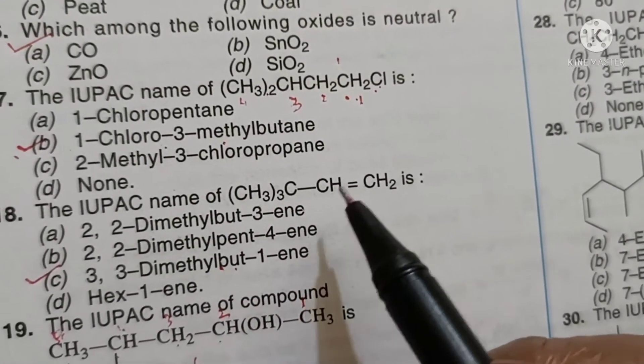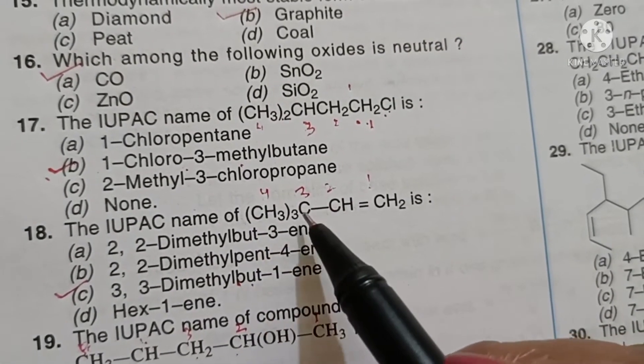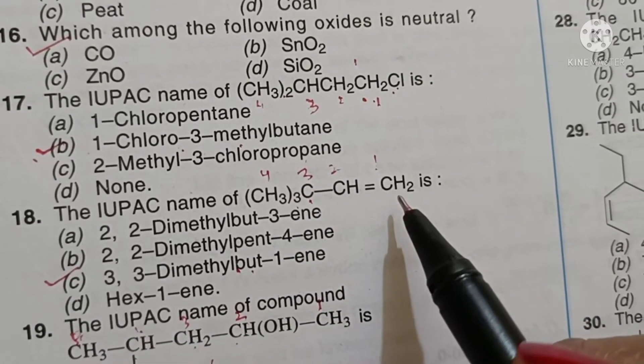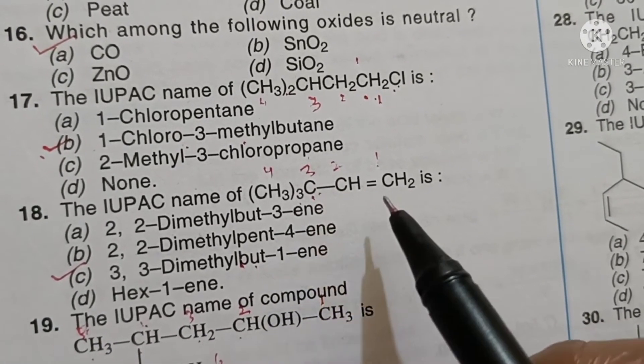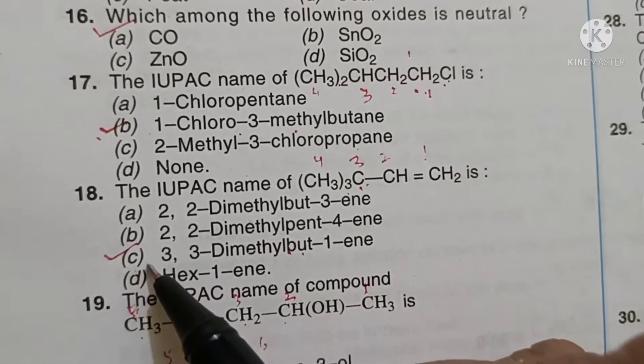IUPAC name of this compound will be 1, 2, 3, 4. There are 2 methyl groups on 3, so it will be 3,3-dimethyl-butane, option C.